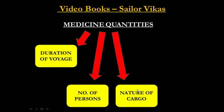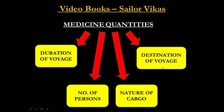The fourth factor is destination of voyage. Some places have different requirements for medicines. For example, Nigeria has very strict regulations regarding medicines. That is why destination of voyage is also considered when deciding medicine quantities.